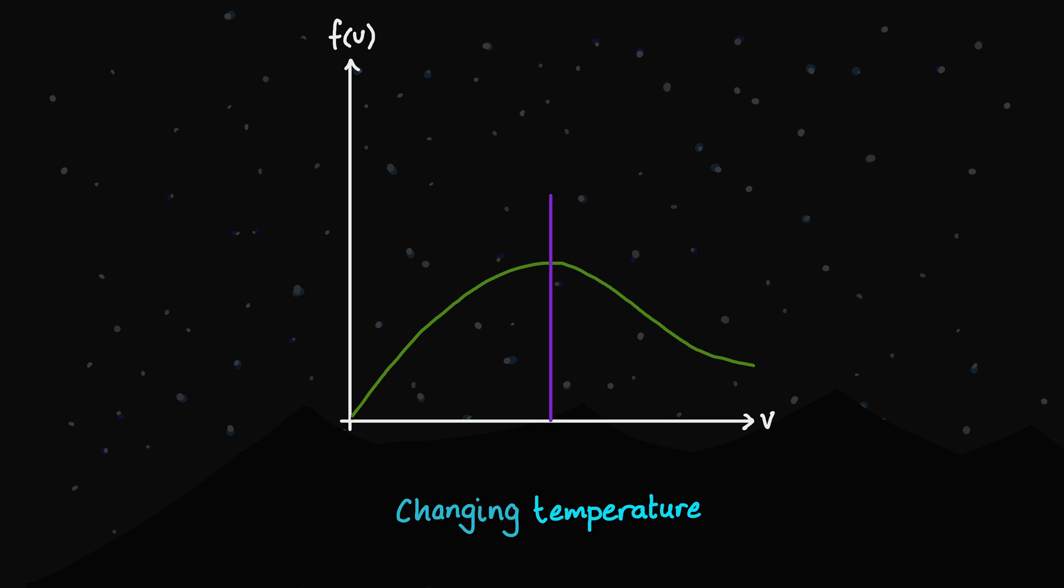We also see that the probability density of the modal speed decreases, however. This also makes sense, because we're modeling the same number of particles in our gas, just at a higher temperature. This means more particles will be moving faster than with the lower temperature gas. And so there's a bigger range of particle speeds, from zero to whatever the fastest is. And hence, fewer particles moving at the same speed.